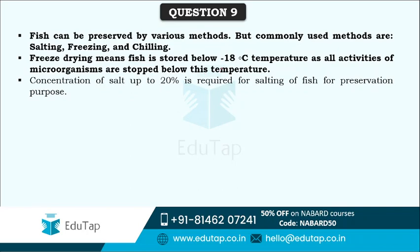Fishes can be preserved by various methods: salting, freezing, chilling, and freeze drying. In salting, the water content in the fishes is reduced; when less water is present, there is less microbial growth and less chance of spoilage. Chilling is a method in which fishes are cooled to prolong their shelf life. Smoking is a method to give a special taste to fishes - they are put in smoke so a unique taste and flavor develops.